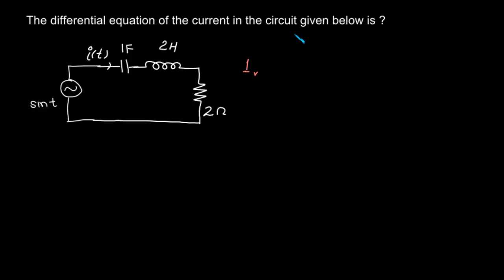If you have a current I flowing through a resistor, then we have voltage across the resistor according to Ohm's law as I times R. Now what about an inductor? The voltage across the inductor is L di/dt because the voltage across an inductor is proportional to the derivative of current through it.